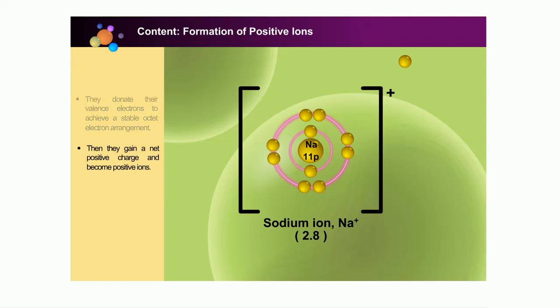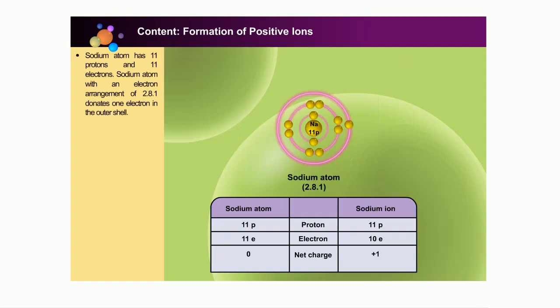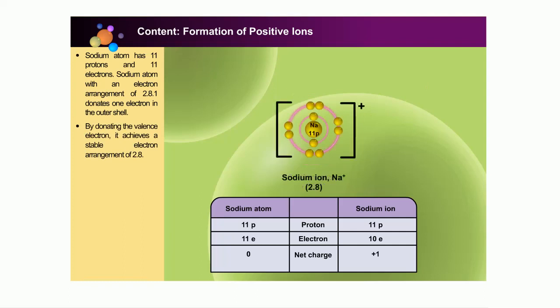Let's see some examples. Sodium atom has an equal number of protons and electrons, which are 11 protons and 11 electrons. This sodium atom with an electron arrangement of 2-8-1 donates 1 valence electron. By donating 1 valence electron, it achieves an octet with a stable electron arrangement of 2-8. Thus, the sodium atom now has 11 protons and 10 electrons, gaining a net positive charge of 1 and becoming a positive ion.